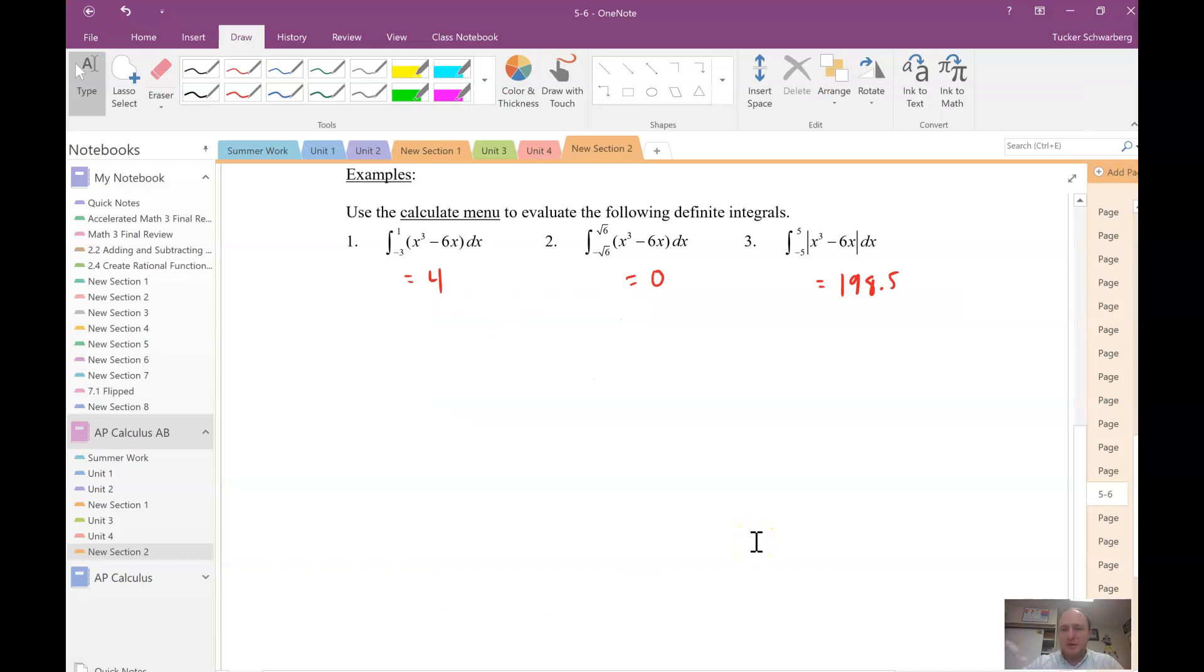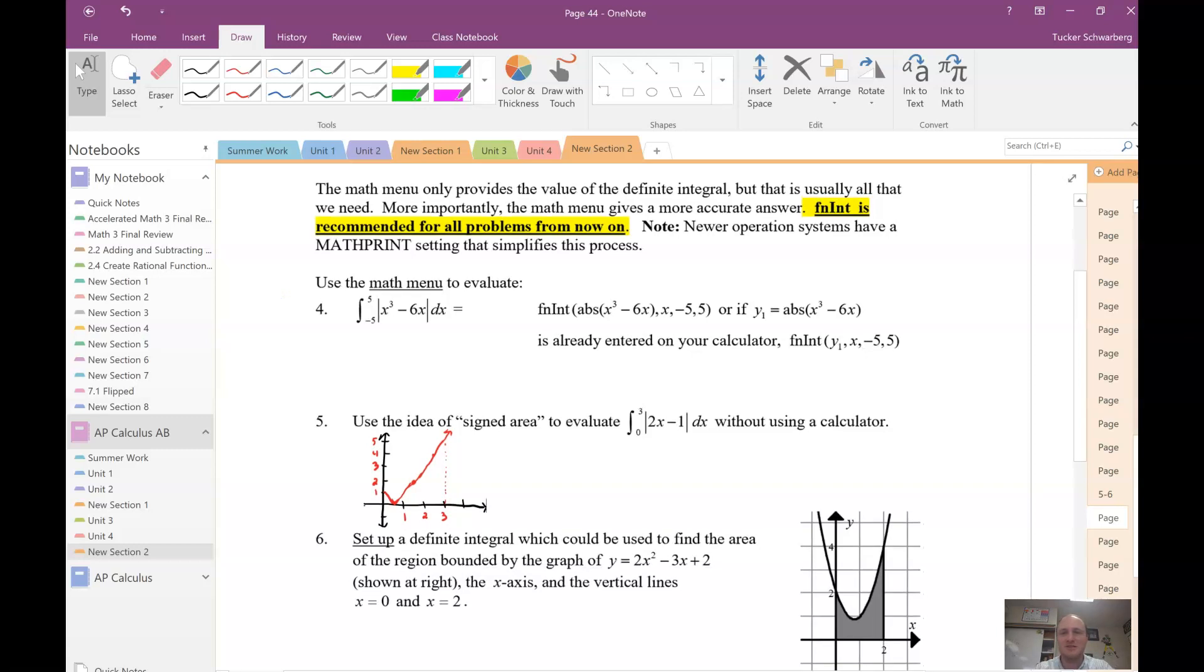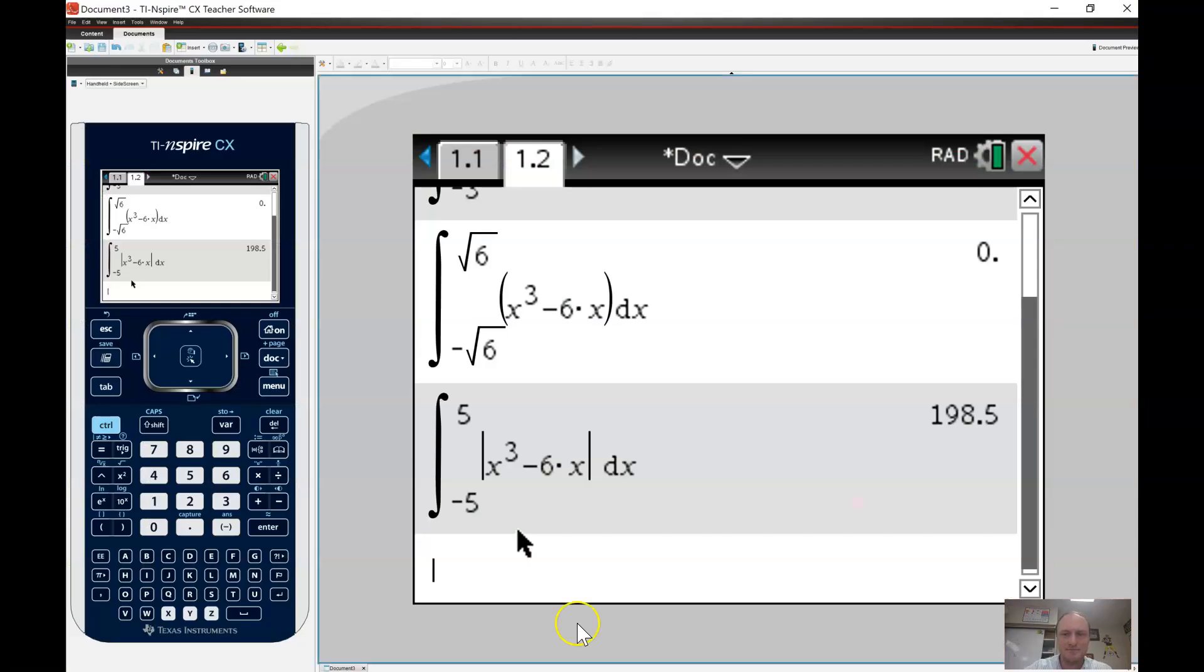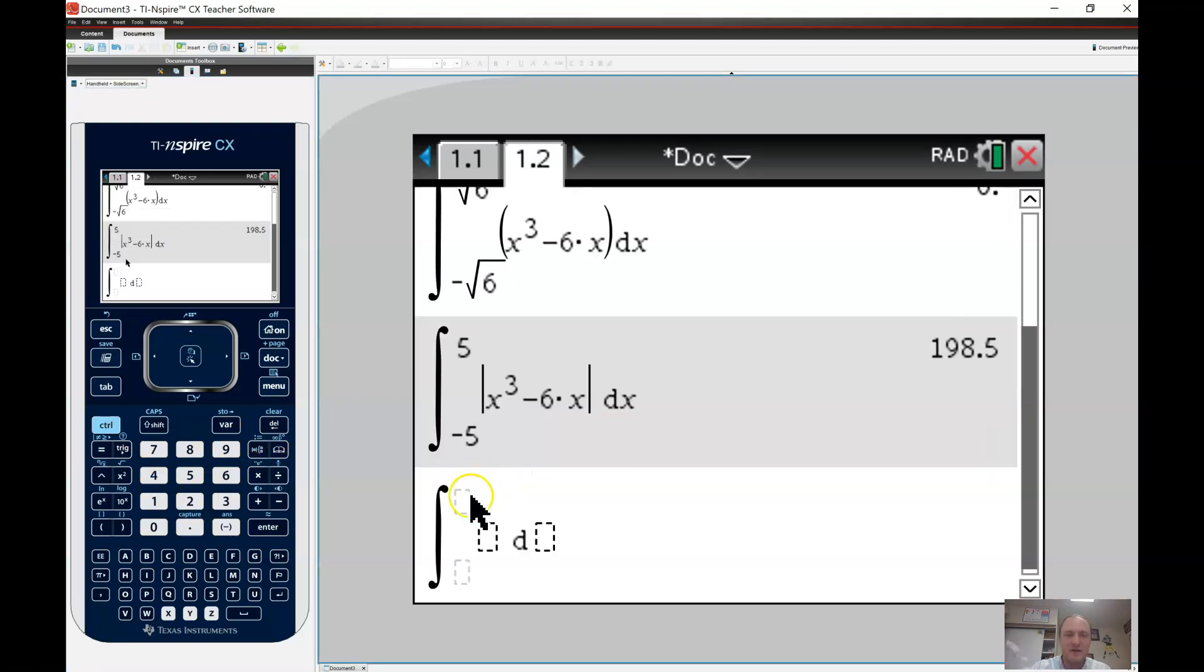And to make sure you get more than three places, right? Rounded or truncated, that's what you want. Okay, the next page in your notes, the next portion, it's just talking about how sometimes we can actually use the function, the math menu, and you can get a more approximated value.